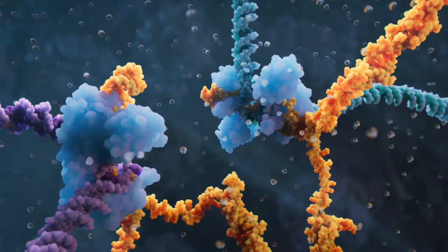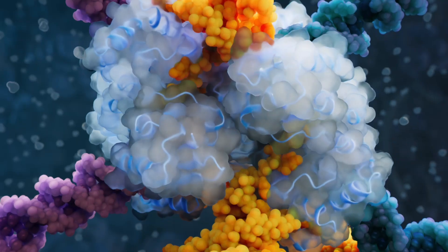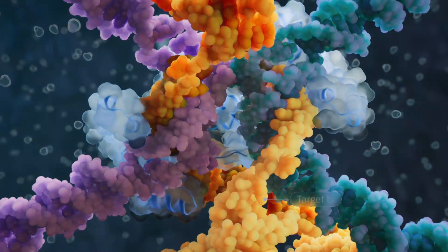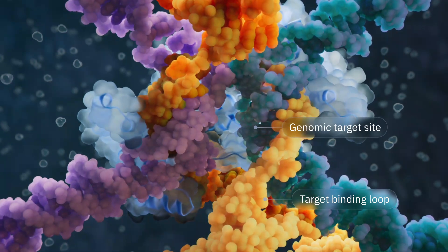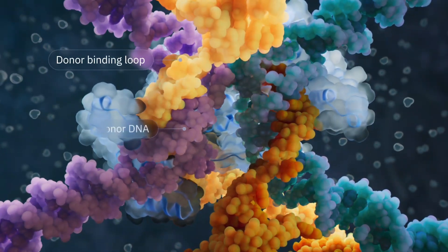Uniquely, this bridge RNA contains two loops: one that guides the recombinase enzyme to the genomic target site, and a second that recognizes the donor DNA.